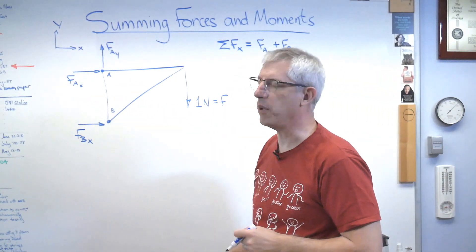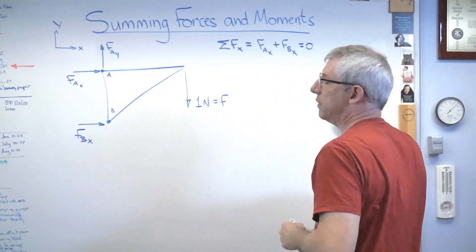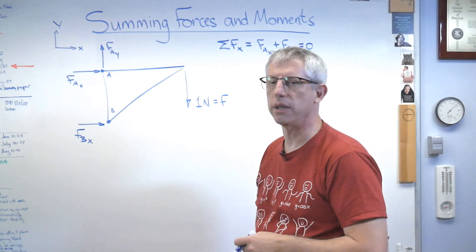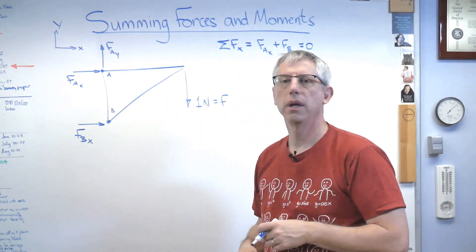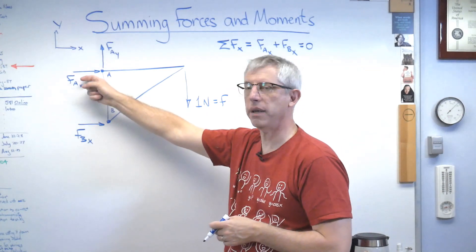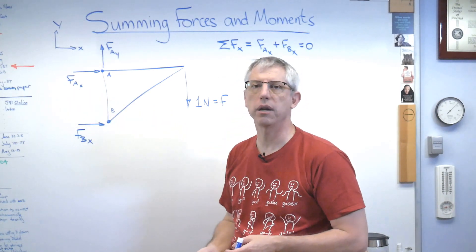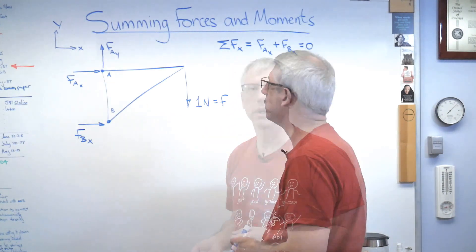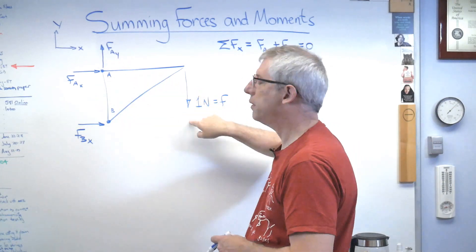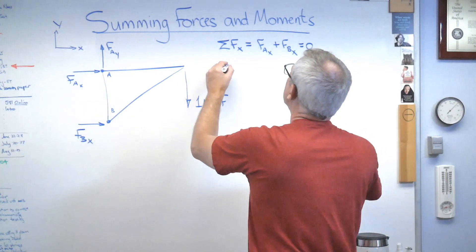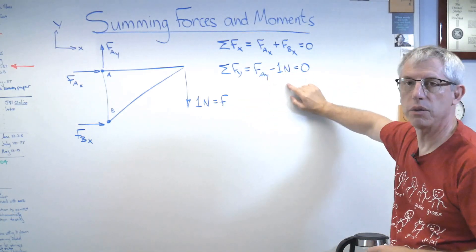One of those has to be negative — they can't both point the same direction if the sum of forces in x must equal zero for a static system. I've done this enough to think one is pointed the wrong direction, but the mathematics will take care of it. If my guess is wrong, that force will come out negative — there's nothing wrong with a negative force, it just means my assumed direction is wrong. Now summing forces in the y-direction: FAy minus 1 newton equals zero. That's equation number two.